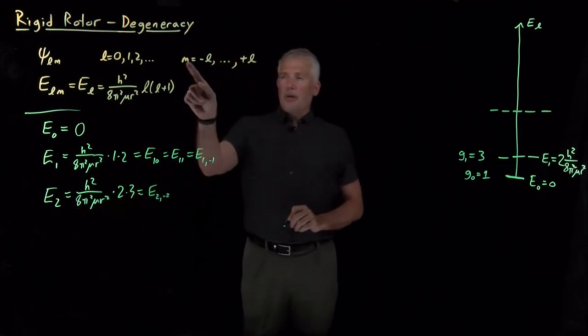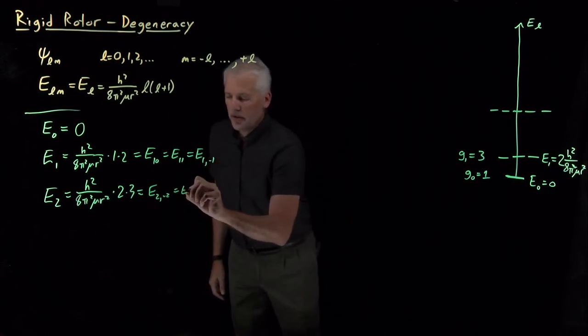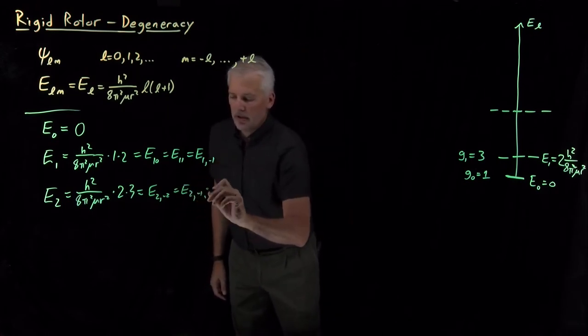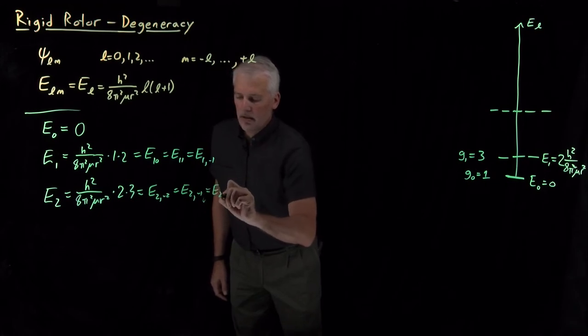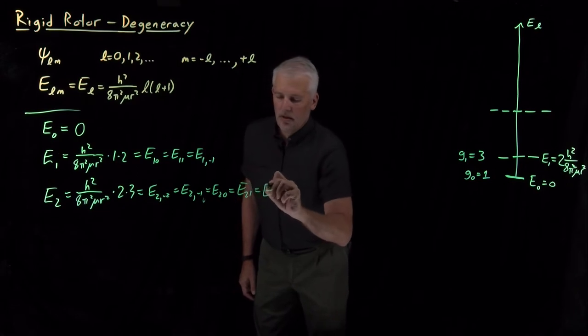When L is equal to 2, M can be anywhere between negative 2 and positive 2. So, it can be negative 2, negative 1, zero, 1, or 2.